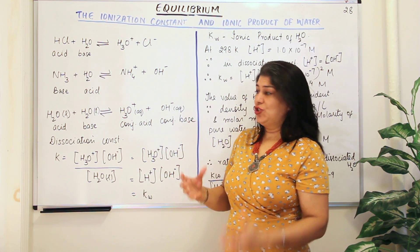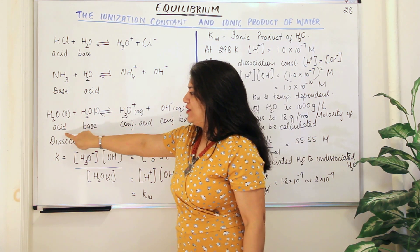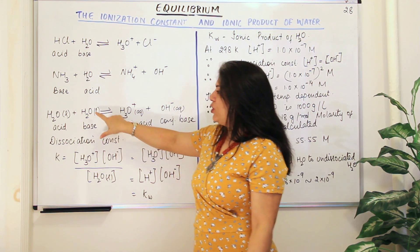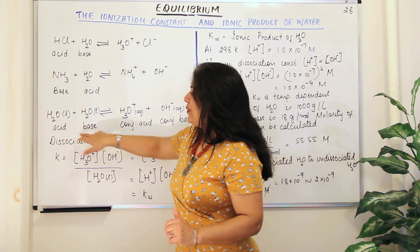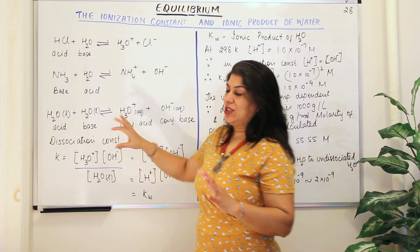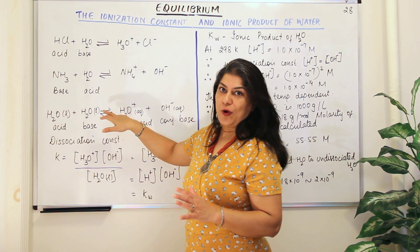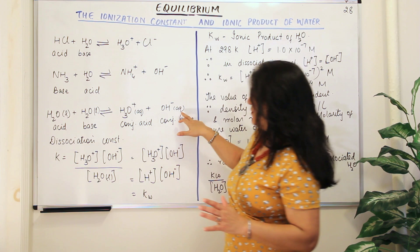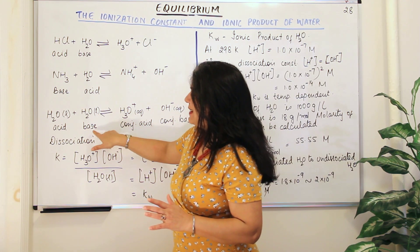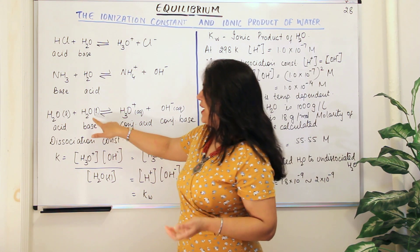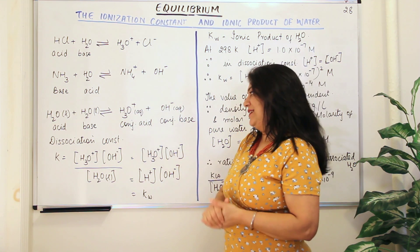In such a reaction, we have one water molecule acting as an acid and another acting as a base. The one acting as an acid donates a proton and becomes OH⁻, which is the conjugate base. The one acting as a base accepts that proton and forms H₃O⁺, which is the conjugate acid.